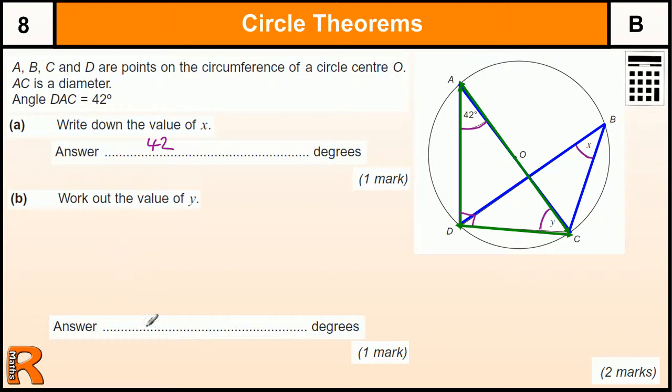So we have 42 plus 90 plus y equals 180 because it's a triangle. So we take those away from 180 and we get y equals 48 degrees.